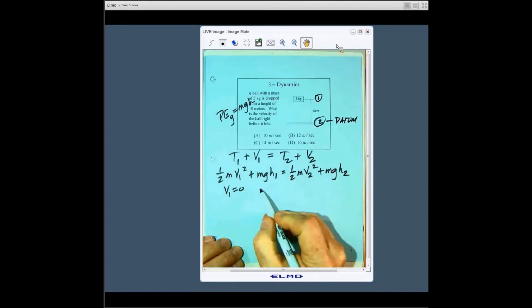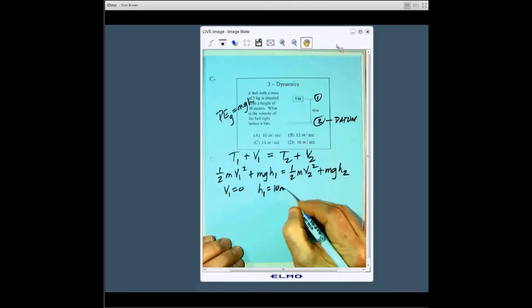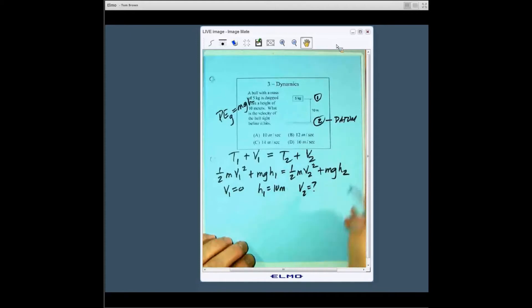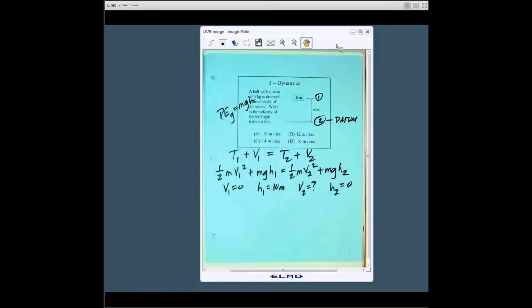Down here v2, well that's what we're looking for so there's our unknown we're looking for. And then h2 when it gets down to here it will be zero elevation so h2 is equal to zero.